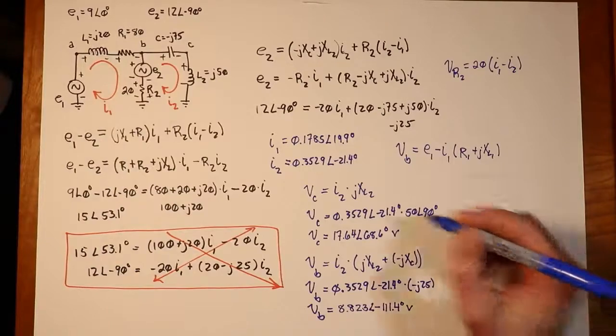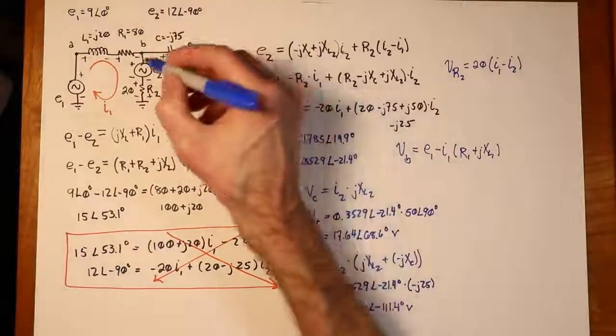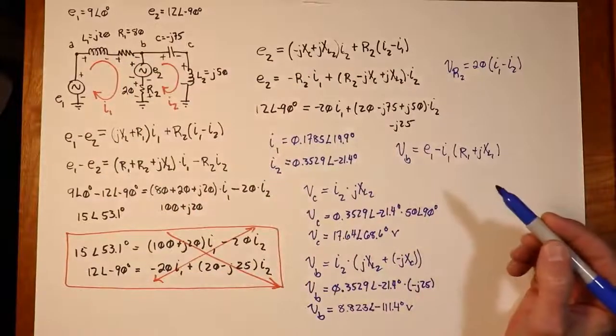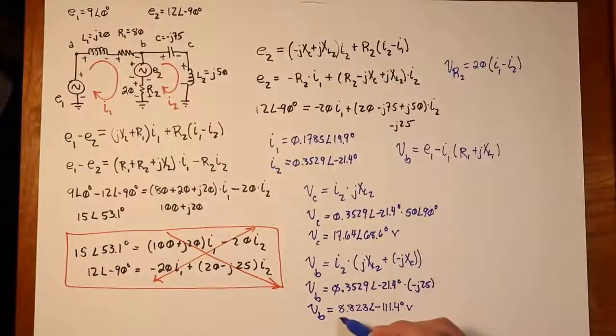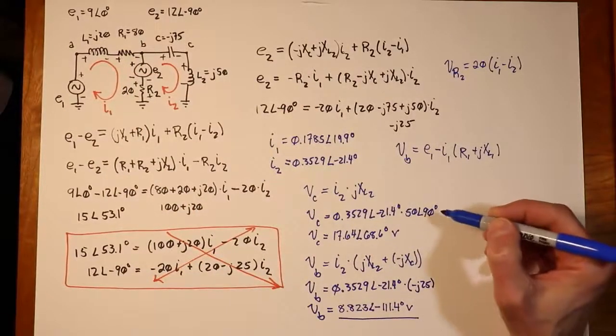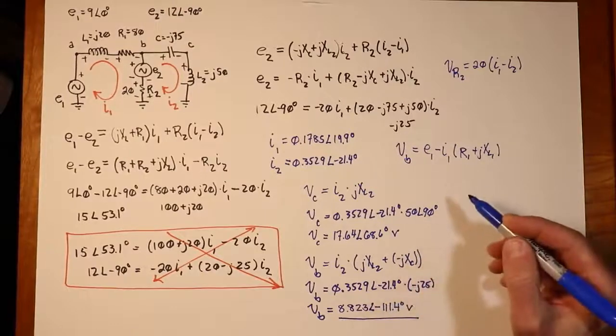However you do it, I mean, there's three ways. You kind of go this way, or you go this way, or you go this way. You're going to have to come up with the same value. You're going to have to come up with this 8.8 volts at negative 111 degrees.